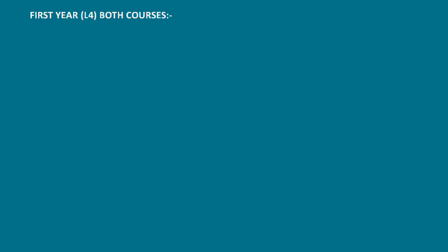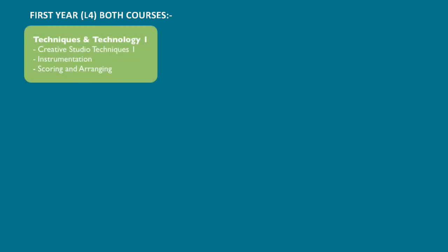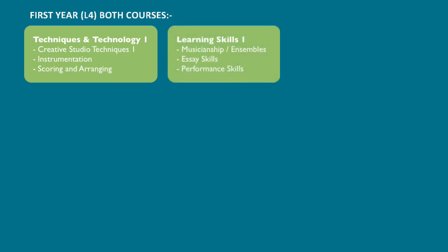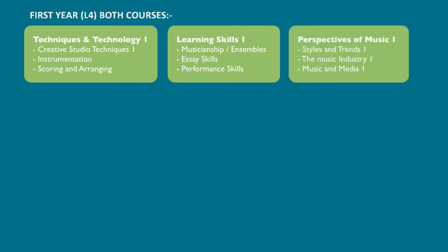During the first year, students on both courses undertake modules in Techniques and Technology, which looks at creative studio techniques, making sure students know how to use digital audio workstations and various pieces of software, alongside instrumentation, scoring and arranging techniques. Learning Skills 1 covers musicianship and performance skills alongside essay skills, and we also include a module called Perspectives of Music, which looks at styles and trends, the music industry and how music works with other media.